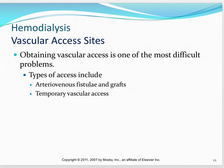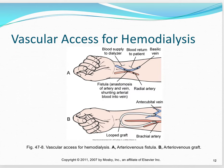Hemodialysis requires vascular access sites — these are fistulas and grafts in the arm. Here's a picture of how they do this. You have the vascular graft, the vascular access, and then you have the AV fistula.